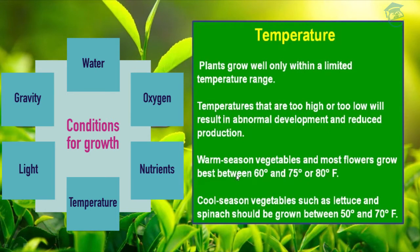First is temperature. Plants grow well only within a limited temperature range. Temperatures that are too high or too low will result in abnormal development and reduced production. Warm season vegetables and most flowers grow best between 60°F and 80°F, while cool season vegetables such as lettuce and spinach should be grown between 50°F and 70°F.